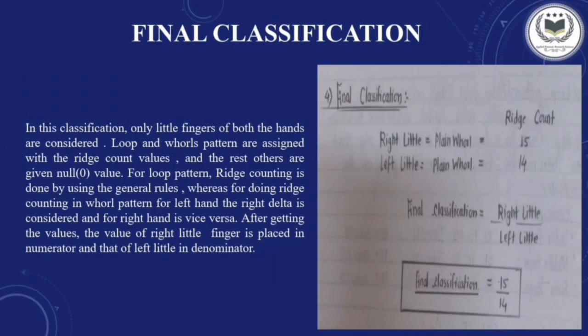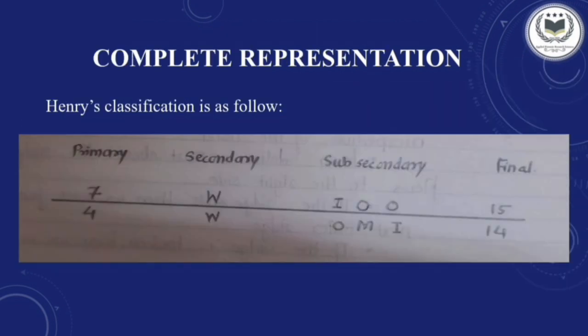The last step to complete the Henry's classification is the final classification. Here we consider the little fingers of both hands — right little finger and left little finger. If they contain a loop pattern, they are assigned the ridge count value; all other patterns such as arch receive a null value. Ridge counting is done under general rules, but for the whorl pattern, the right delta is used for the left hand and the left delta is used for the right hand. The right little finger is placed in the numerator and the left little in the denominator. For example, if both right and left little fingers have a plain whorl pattern with ridge counts of 15 and 14 respectively, the final classification value is 15/14.